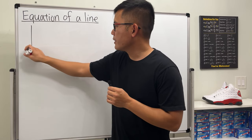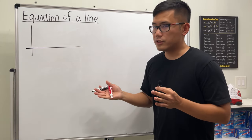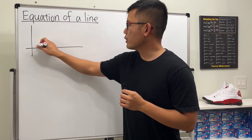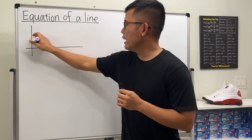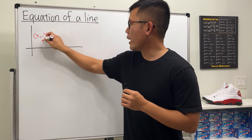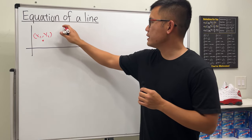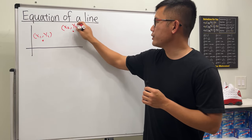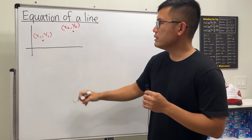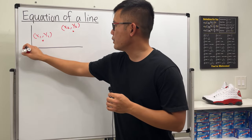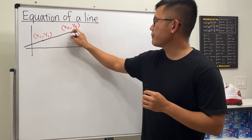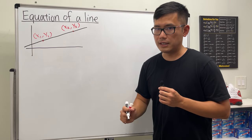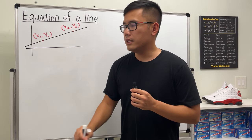When we're given two points, we have a point labeled x1, y1 and another point labeled x2, y2. We can connect them with a line, and the goal is to find an equation of this line.